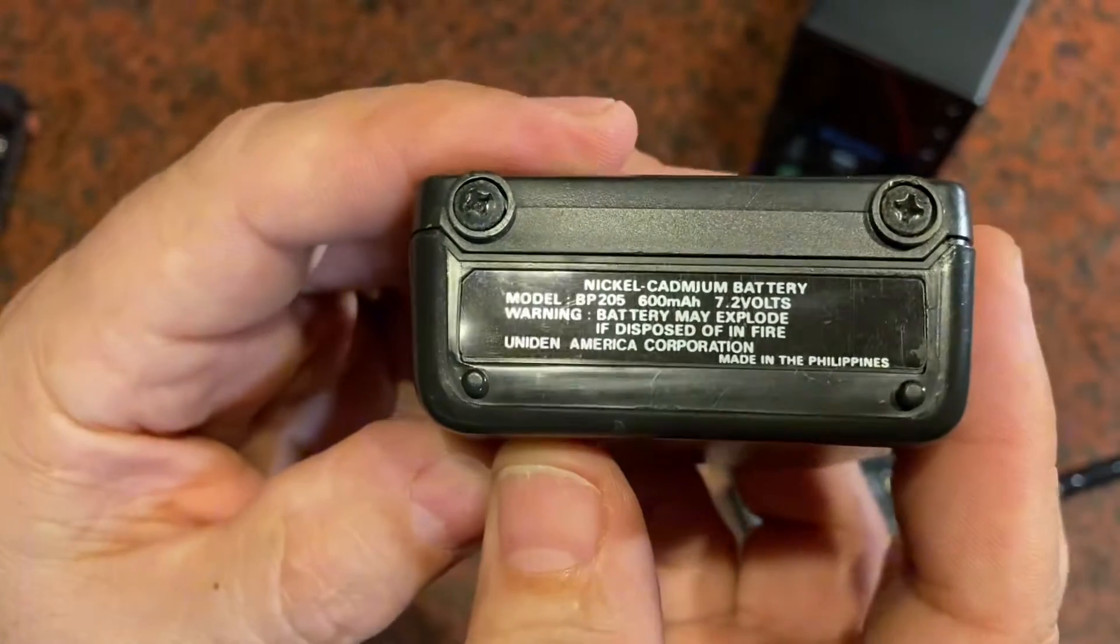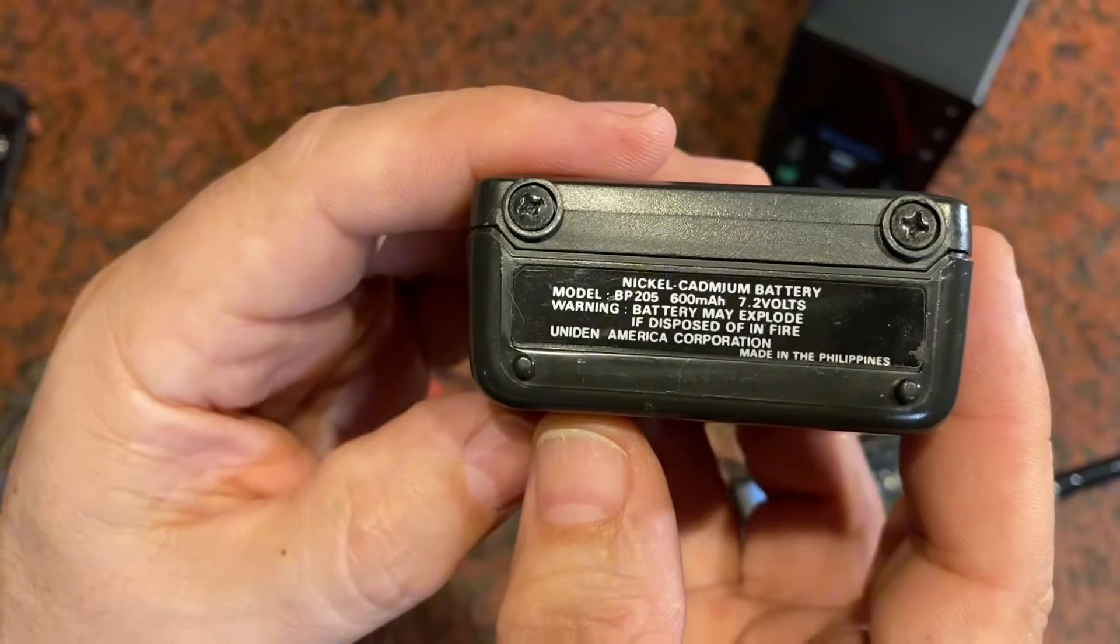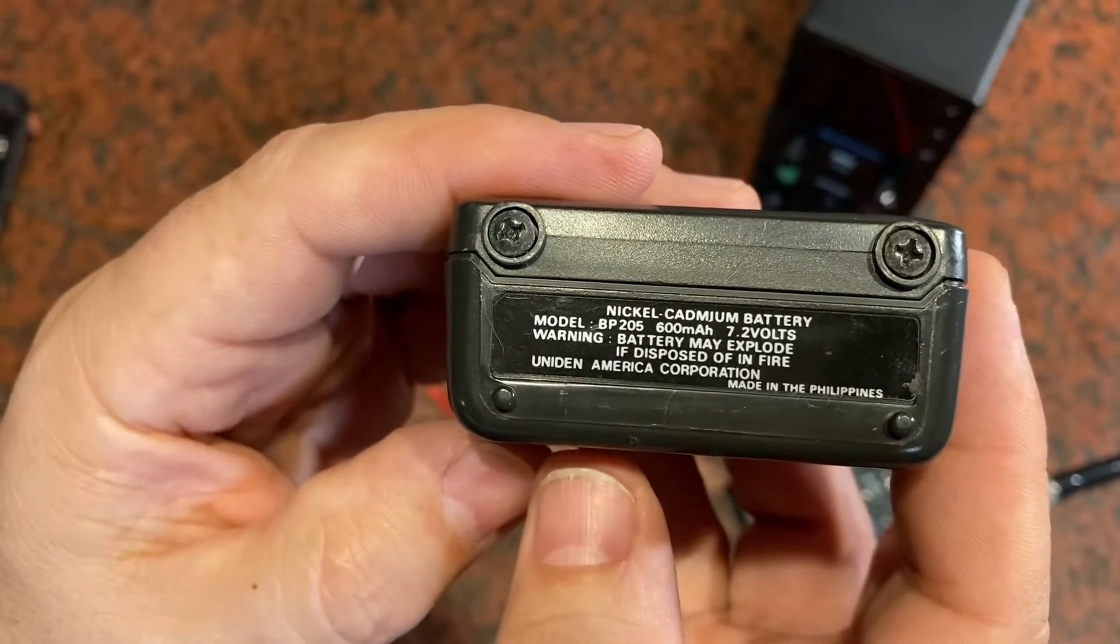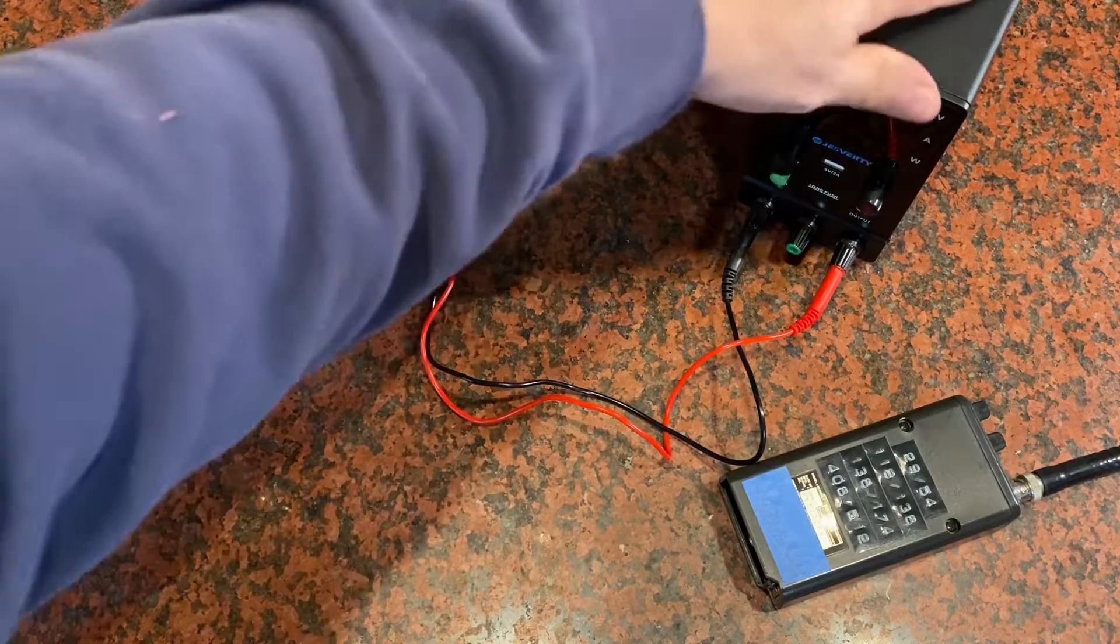On this thing, a nickel cadmium battery, 600 milliamps at 7.2 volts. All right, we'll see if we can enter this into this DC power supply.